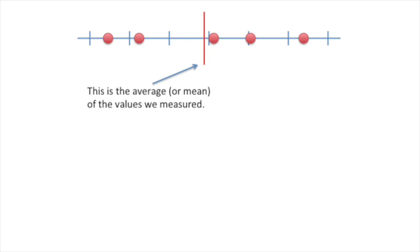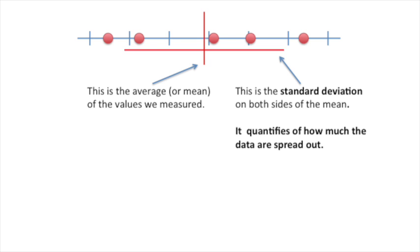This is the average, or mean, of the values we measured. This is the standard deviation on both sides of the mean. It quantifies how much the data are spread out.